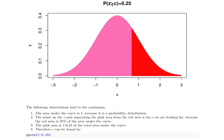The Z is greater than C. The probability of the Z being greater than C is going to be 25%, so this area is 25% and we're looking for this point right here.